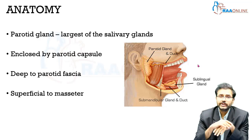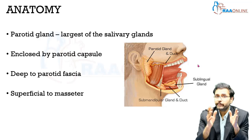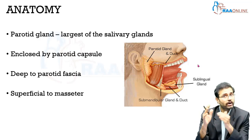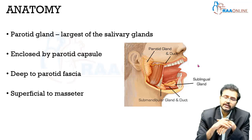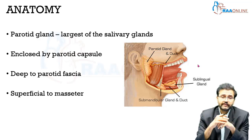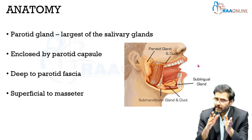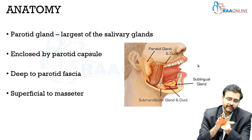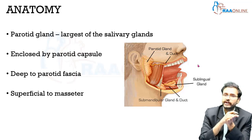Let's first discuss about the anatomy of the parotid gland. The word parotid or parotic means it is located in and around the ear. It is the largest of the salivary glands and it is enclosed by a thick parotid capsule. This parotid capsule is formed by the deep cervical fascia which splits to encase the parotid gland.